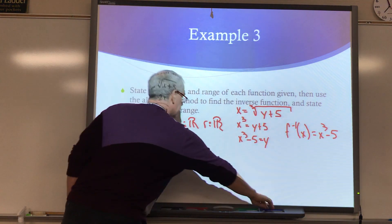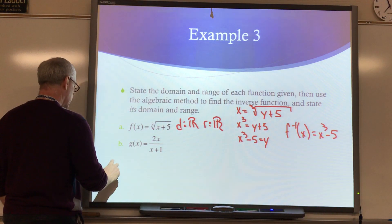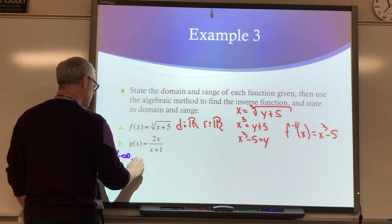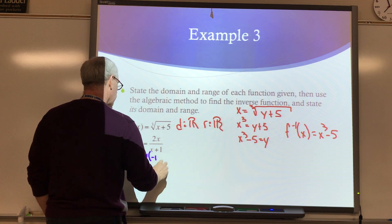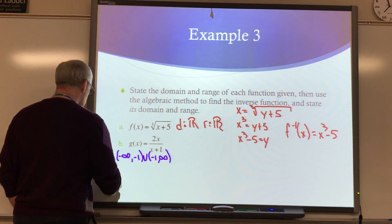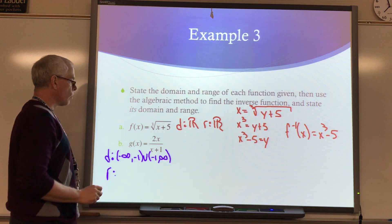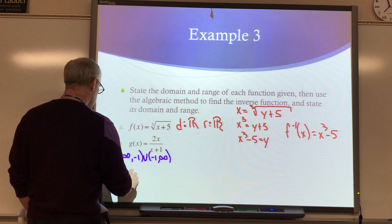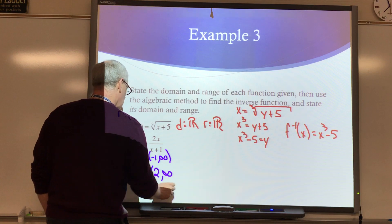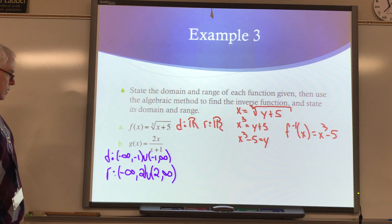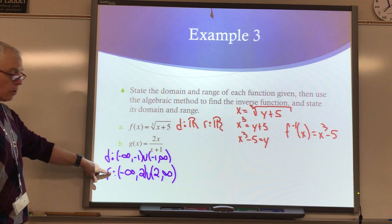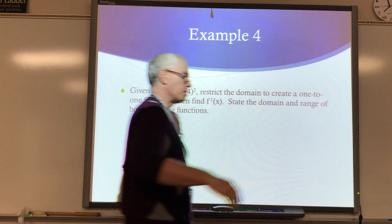How about over here? If you were to graph this one, you would see that your domain is all real numbers except negative 1 — so negative infinity to negative 1, union negative 1 to infinity — because you have a vertical asymptote at negative 1. For the range, there's a horizontal asymptote at 2, so the range is going to be all real numbers except 2. Once I find the inverse, the domain and range are going to switch: the domain for the inverse will be all real numbers except 2, and the range will be all real numbers except 1.